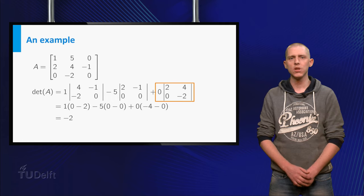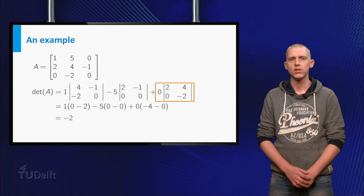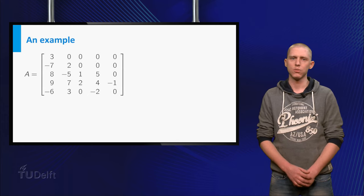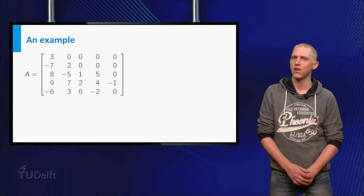In this example you can see that the third cofactor is multiplied by 0. Now you can compute the determinant of a larger matrix, for instance the shown 5 by 5 matrix.